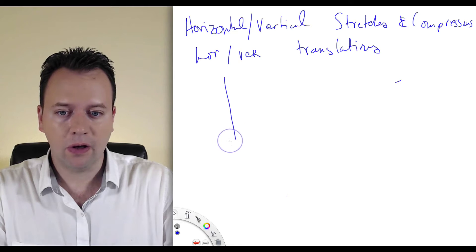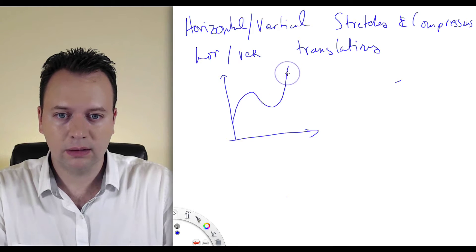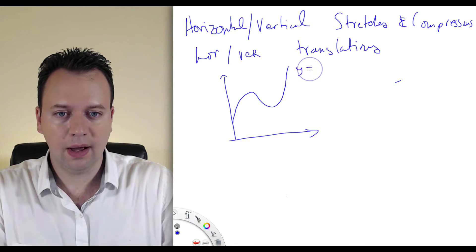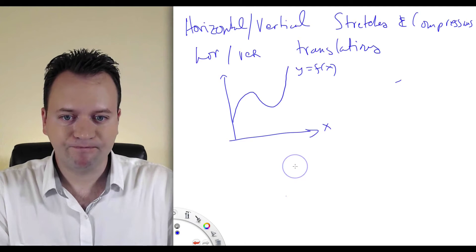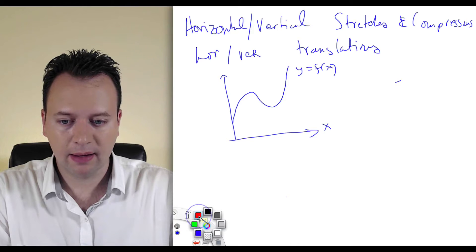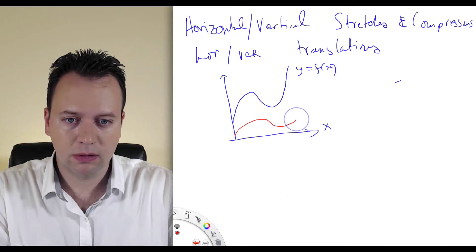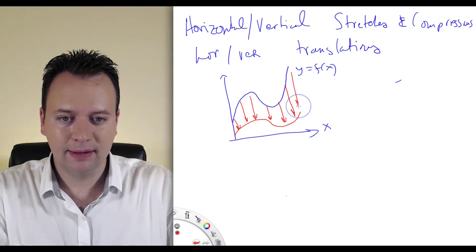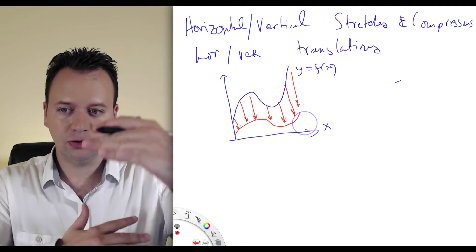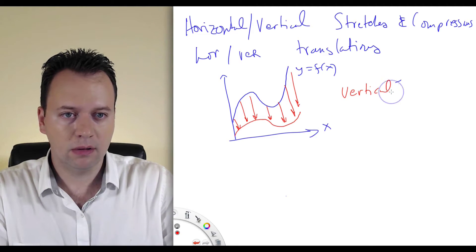Suppose I have a function that looks like this — that's y equals f of x. Now suppose the new function has all of the y values pressed against the x-axis, so it's squished. This is called a vertical compression.